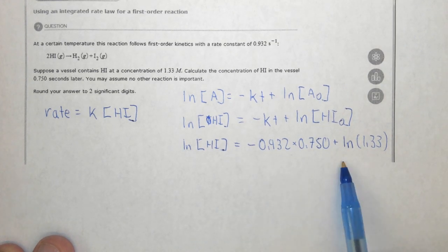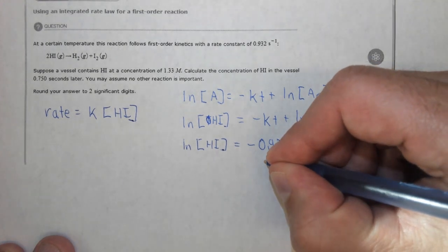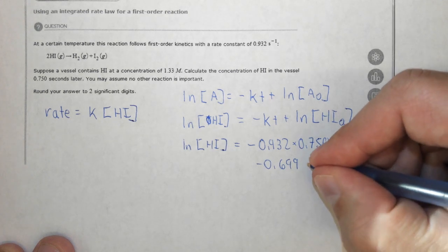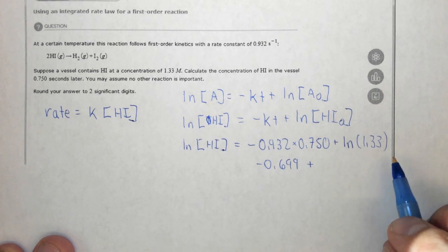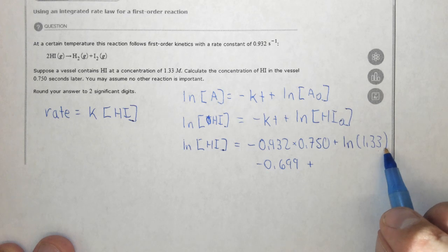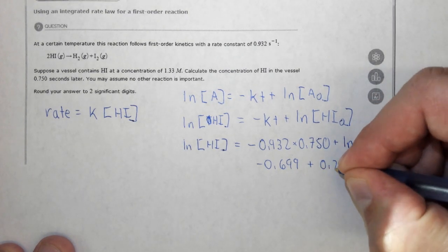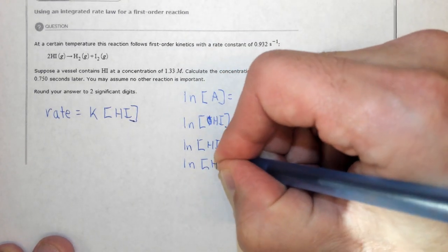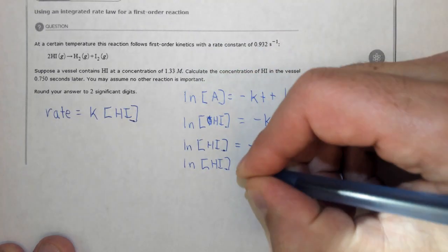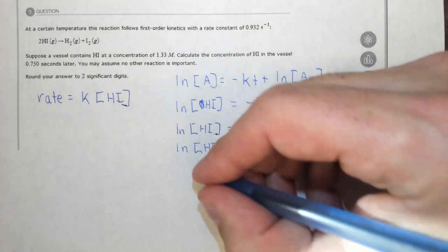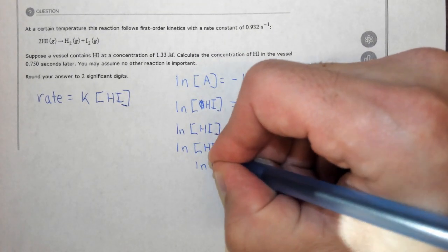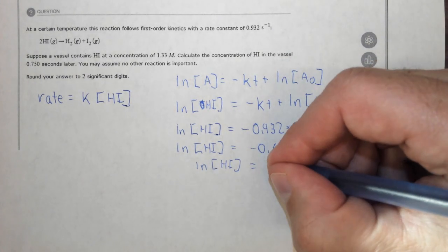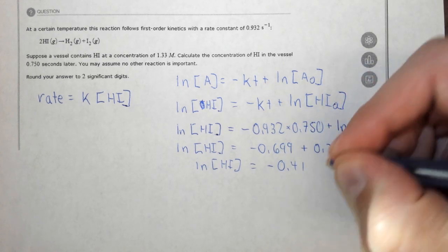Now, when we multiply these two numbers together, we get -0.699 plus the ln of 1.33. You just use a calculator, type in ln, and put 1.33, which is 0.285. So the ln of HI is equal to this. Adding those together, the ln of the HI concentration is equal to -0.414.